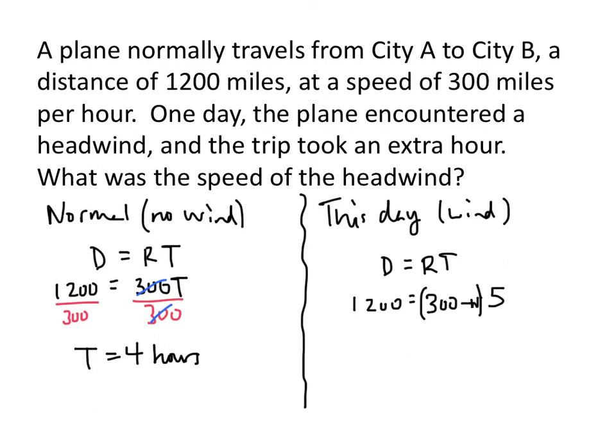So now this gives us an equation to solve. We get 1,200 equals, if we multiply out the right-hand side, 300 times 5 is 1,500 minus 5w. Let's add 5w to both sides and subtract 1,200 from both sides. And that gives us 5w equals 300, or in other words, w equals 60.